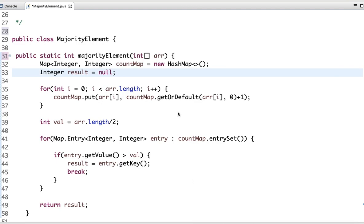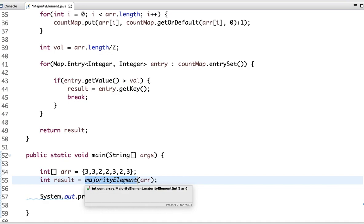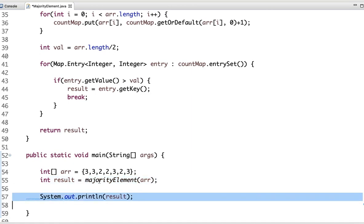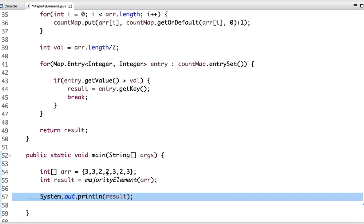Let's see the main method. In the main method I have called the method majority element, in which I have passed the array as an argument, and I am printing the result which I obtain after calling this method. If I run this code, see the output is 3. 3 is the majority element present in this array.